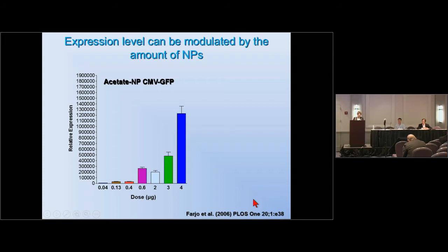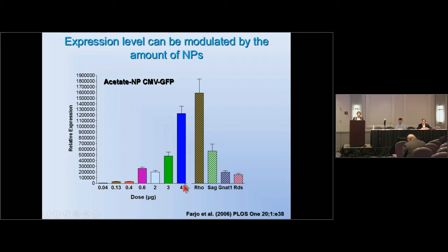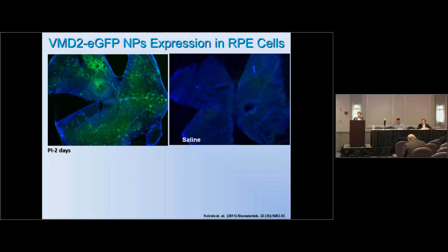We showed no toxicity at all, even after multiple dosing. We can modulate the level of expression based on the amount of nanoparticle delivered. We found that 4 micrograms of DNA in 1 microliter of nanoparticles gives a very nice level of GFP expression using CMV as a promoter, comparable to about 88% of rhodopsin, the highest expressing gene in the eye. We can modulate the level of expression to S-antigen or transducin by changing the amount of DNA delivered. In most studies, we delivered it in the subretinal space for better expression in photoreceptors and RPE.